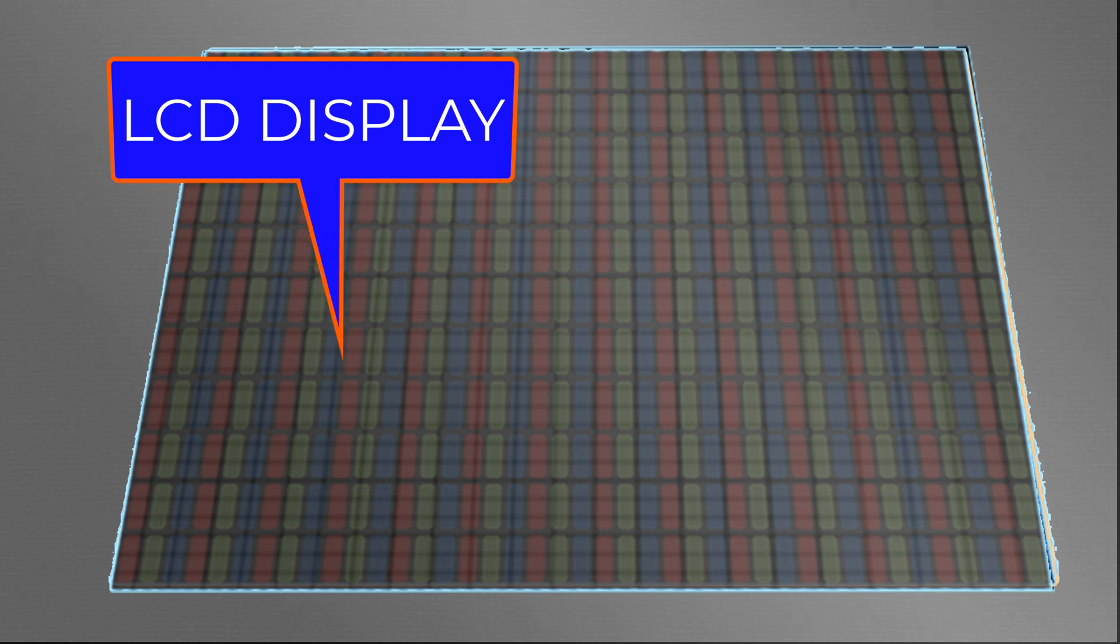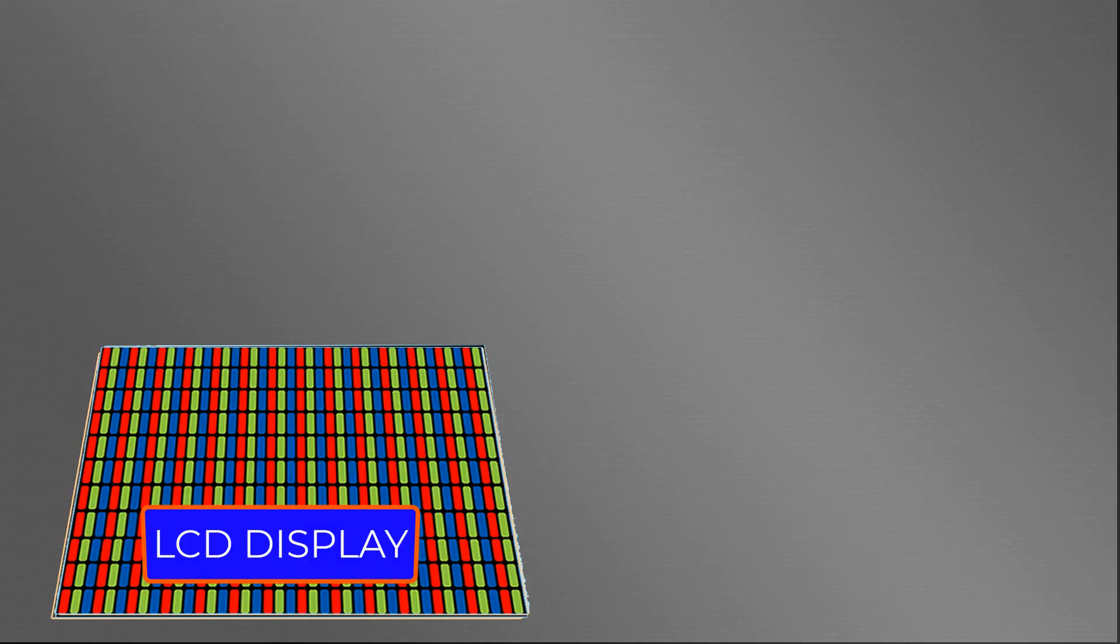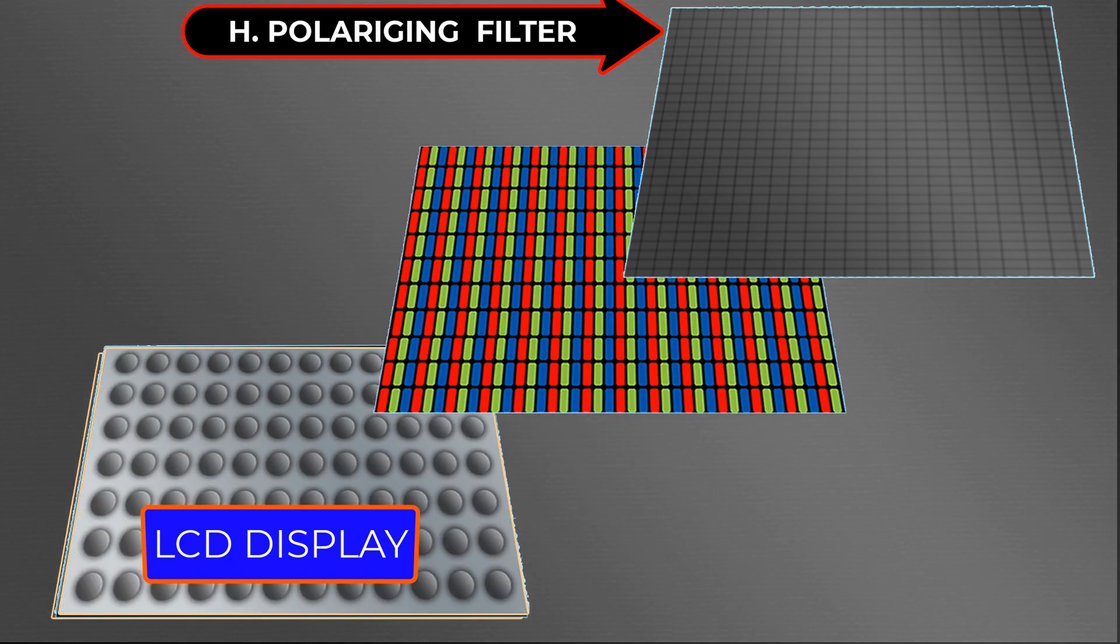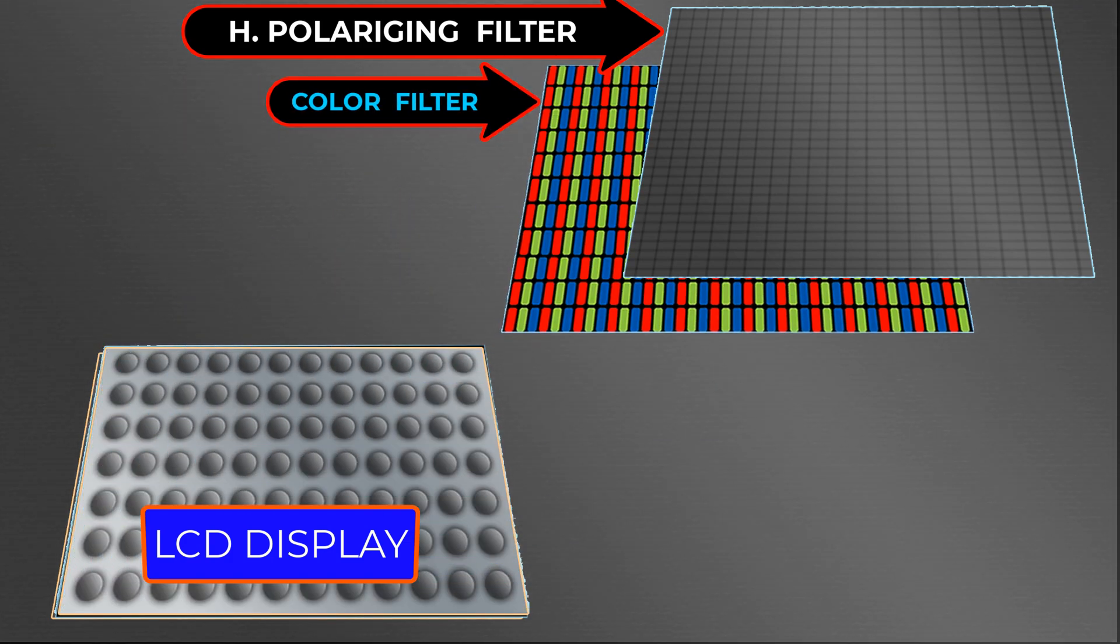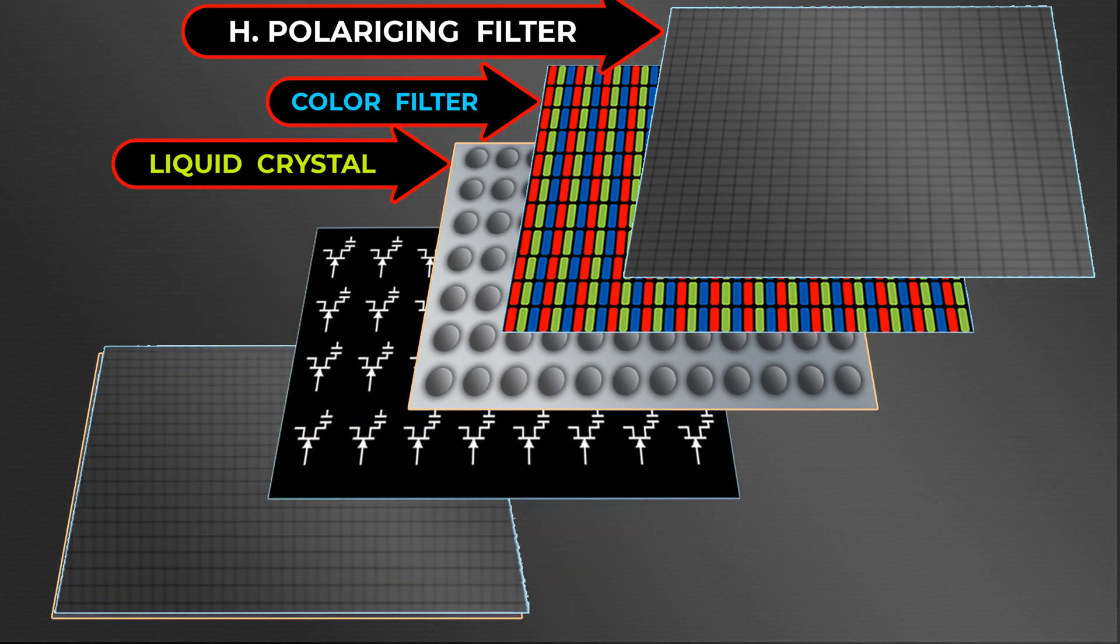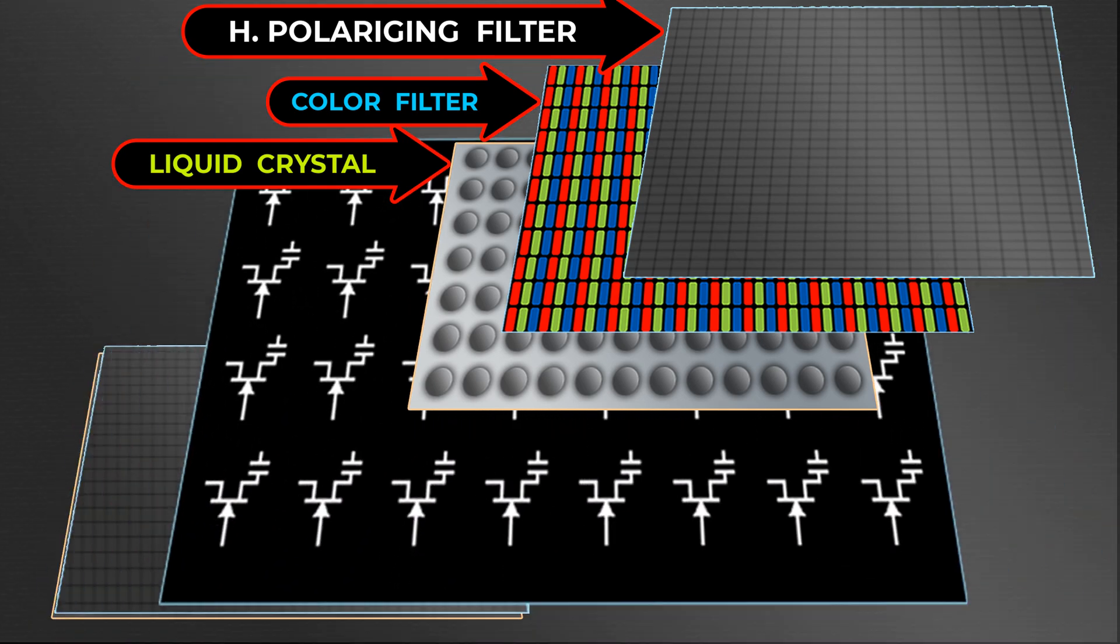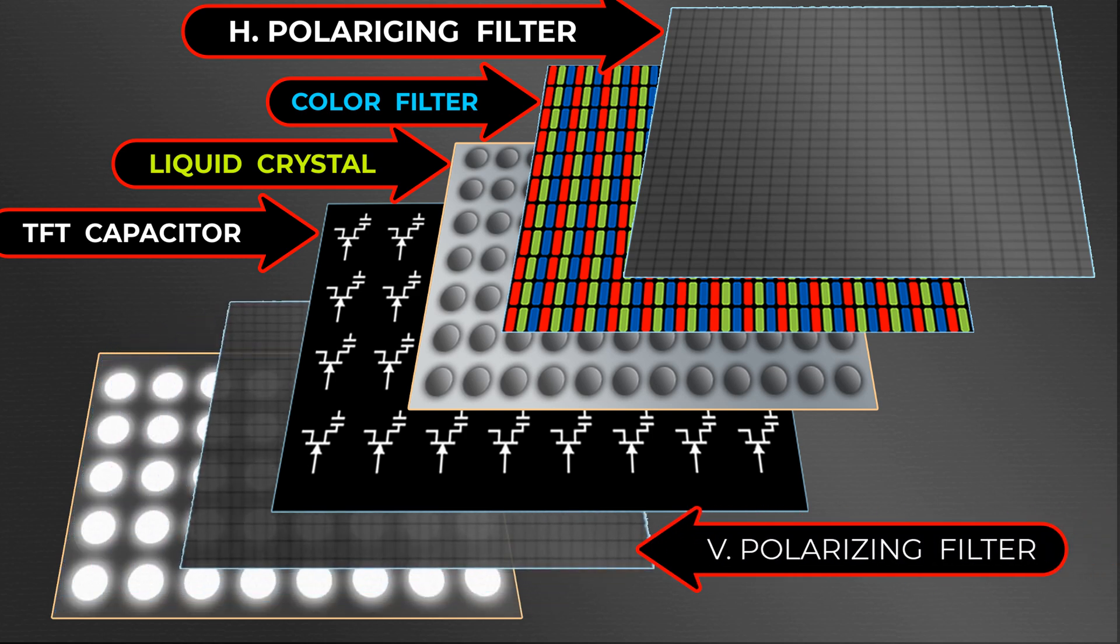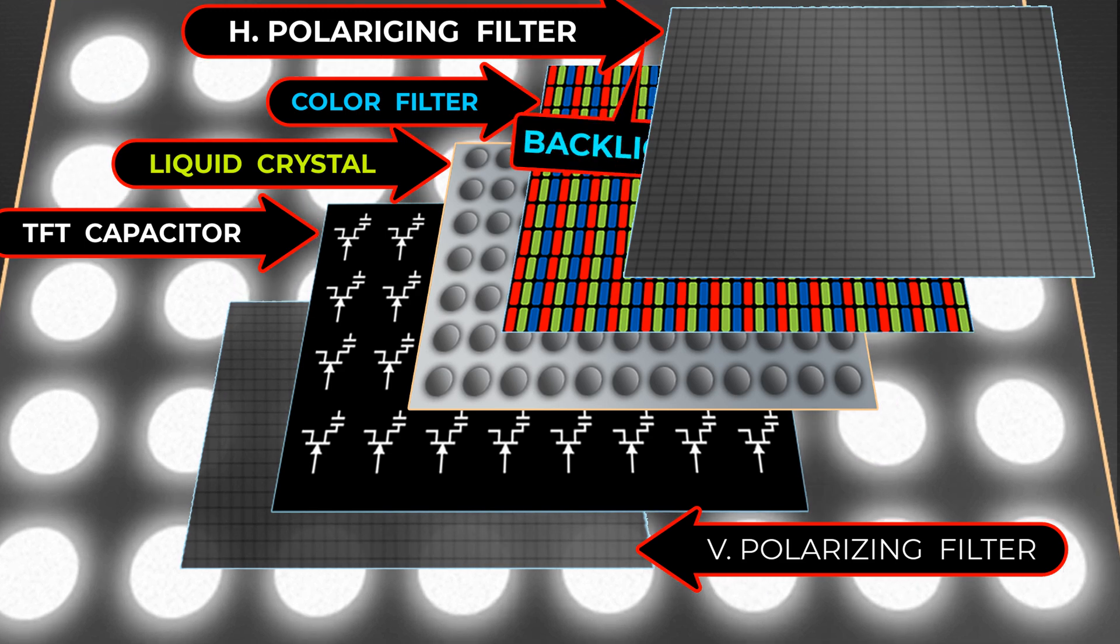This is our LCD panel. It has a horizontal polarizer on top and this color filter is below the polarizer. This is the liquid crystal layer. This is TFT matrix. Then below that is the vertical polarizer. And at the bottom is the backlight.